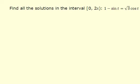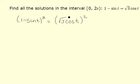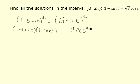I'm going to square both sides in order to get both sine squares and cosine squares. So, 1 minus sine t, squared, is equal to the square root of 3 cosine t, squared. 1 minus sine t squared is 1 minus sine t times itself, which equals 3 times the cosine squared of t. Squaring each term, if I FOIL this out, I would be left with 1 minus 2 sine t plus sine squared t is equal to 3 cosine squared t.